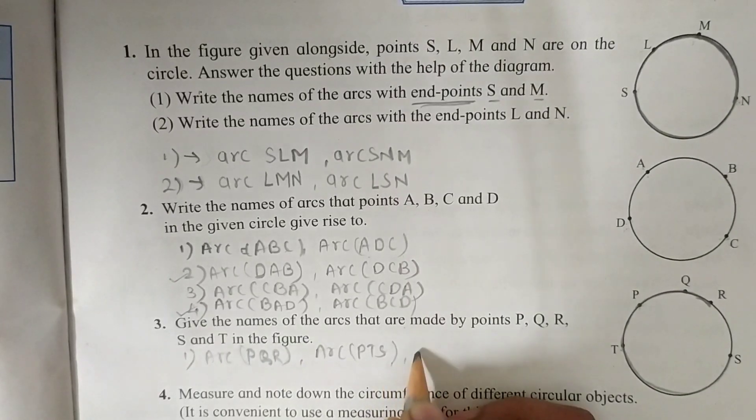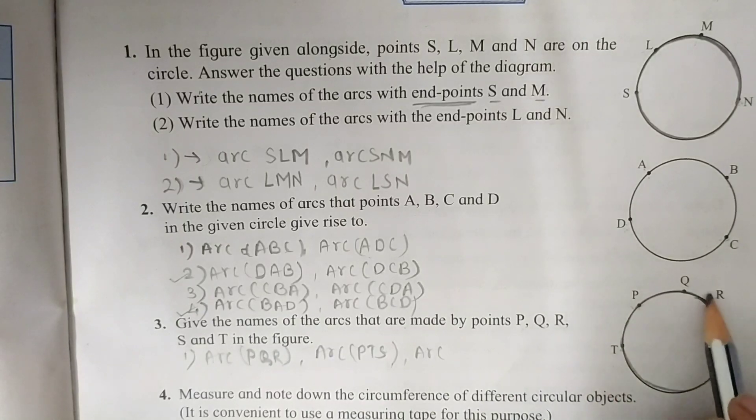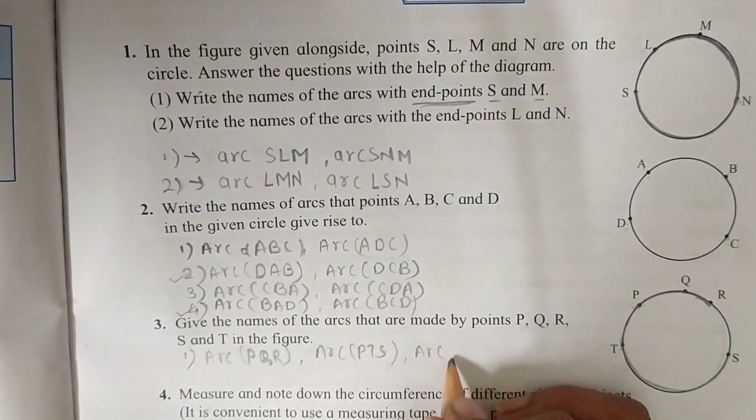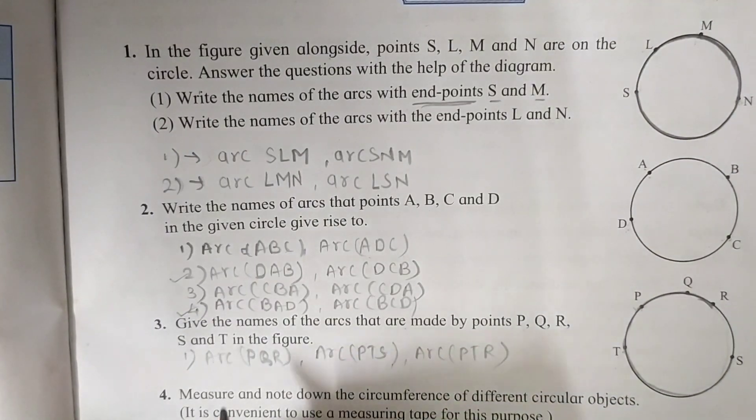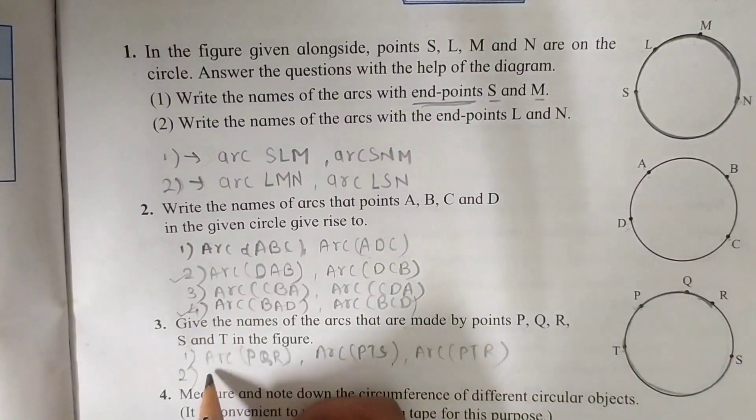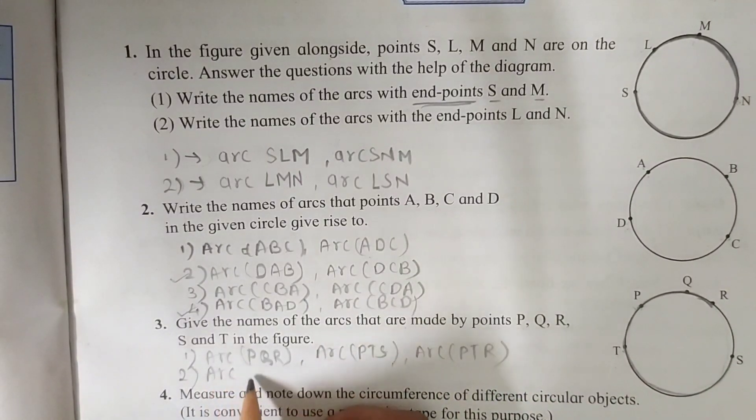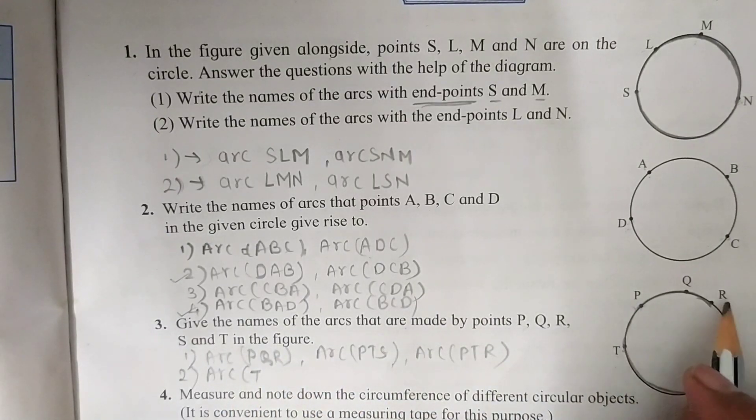We can also write arc P, T, R. This big one P, T, R. The second one is now starting from T. Arc T, S, R.